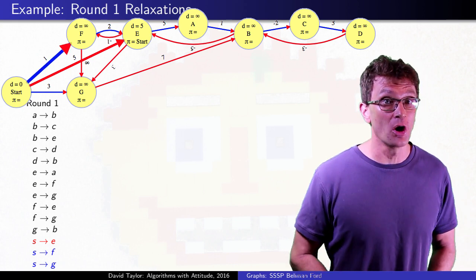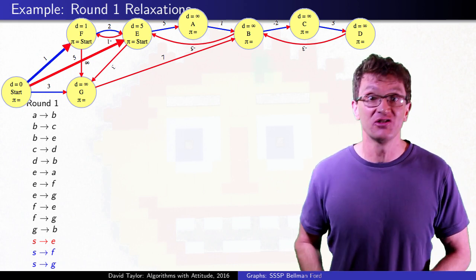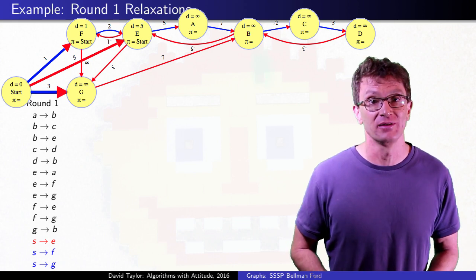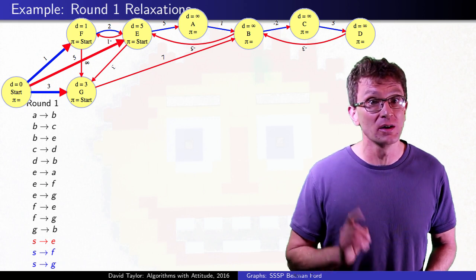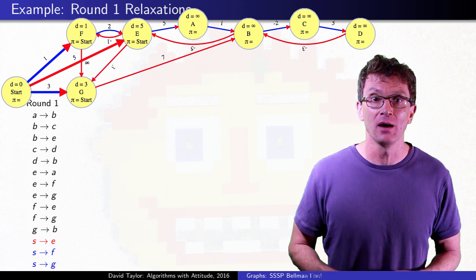Next, relaxations from start to F and G successfully set correct shortest path distances. The shortest paths for those vertices have just one link, so they have to be correct after one round.